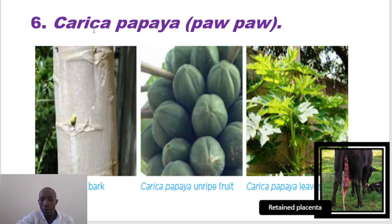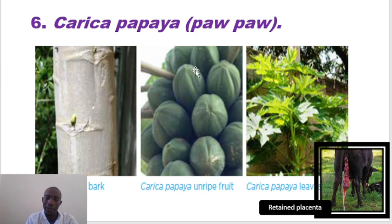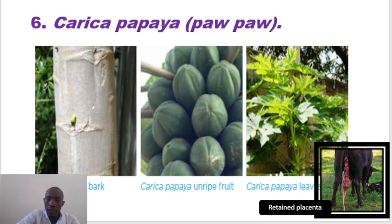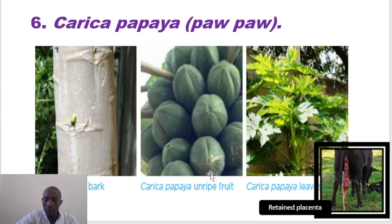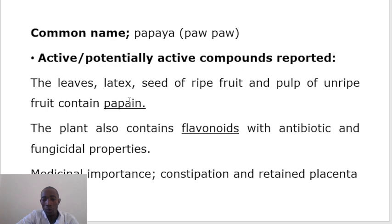The other plant is Carica papaya, which plays a role in control of worms as an anti-helminthic, because it contains an active compound called Papain. Papain helps in the treatment of worms. It also contains flavonoids, which are used as antibacterials. Carica papaya is used in treatment of retained placenta — this is a common case within most of the herds. It's also used in treatment of constipation and retained placentas.